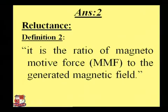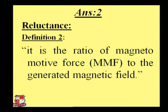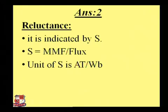The second definition of reluctance: it is the ratio of magnetomotive force, formally known as MMF, to the generated magnetic flux. So by taking the ratio of MMF to the magnetic flux, you can find out the value of reluctance. Reluctance is denoted by the symbol S (capital S). So S equals MMF divided by magnetic flux. The unit of reluctance S is ampere-turns per Weber.